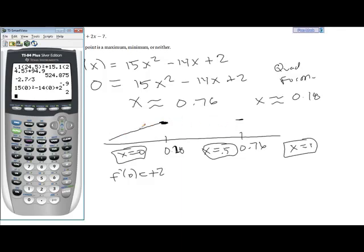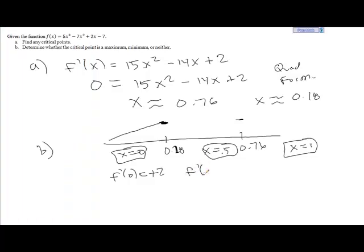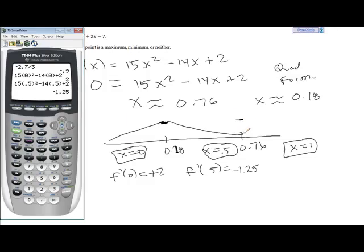Now does it come back down or continue to go up? That's something we have to double check. So now I'll put in 0.5 here as well. And I hit enter and get a negative number. So f prime of 0.5 equals negative 1.25. Again, we only care about the negative part. We know that it's going down.